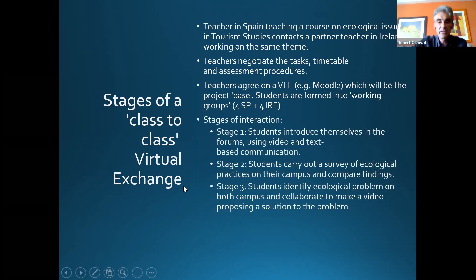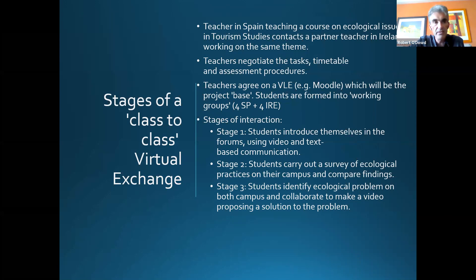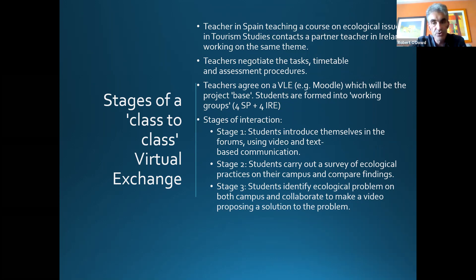The stages of interaction: normally there are three. First, students get together for the first time, introduce themselves, maybe make a short video about their lives and context, and you give them a Zoom meeting with icebreakers — find three things in common, three things that are different. Stage two: students carry out a survey of ecological practices on their campuses and compare their findings — a comparative study, talking about the differences they find. Stage three, the most complex: students identify a problem they want to solve and work together to make a video proposing a solution. The tasks get gradually more complex as time goes on.